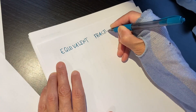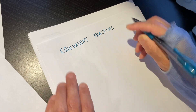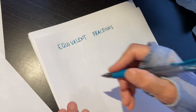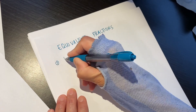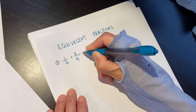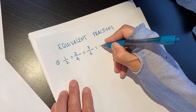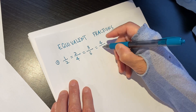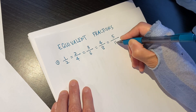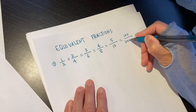Let's do it. So first we do equivalent fraction. Each time we do 3 problems. The first: a half. A half is 2 over 4. It can be 3 over 6. It can be 4 over 8. It can be 5 over 10. It can be 100 over 200.